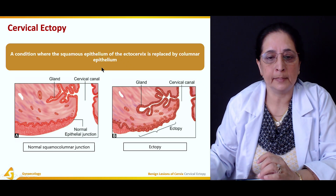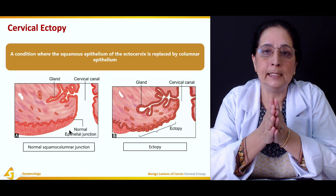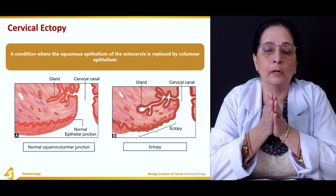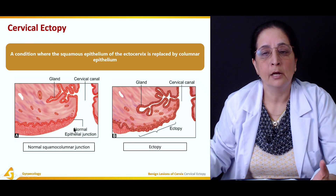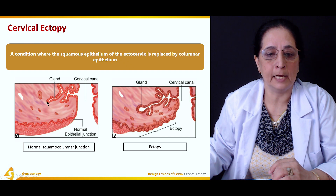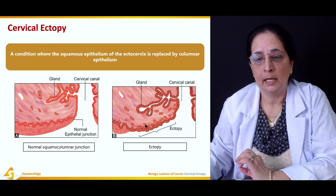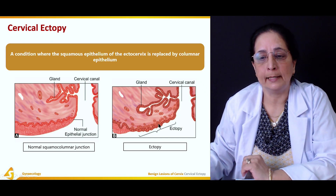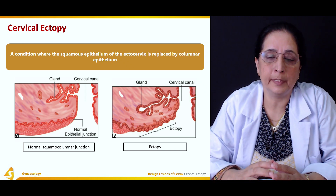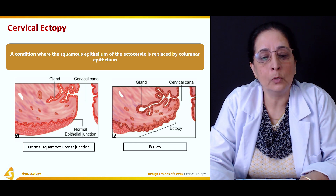In this diagram, you can see the cervical canal and the normal squamous-columnar junction — the junction where the squamous epithelium of the ectocervix meets the columnar epithelium of the endocervix. This is also known as the transformation zone. In ectopy, the squamous epithelium is replaced by the columnar epithelium, meaning the cells of the ectocervix are replaced by the cells of the endocervix.